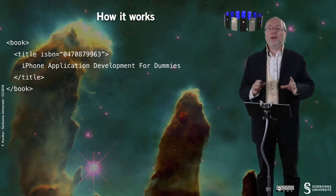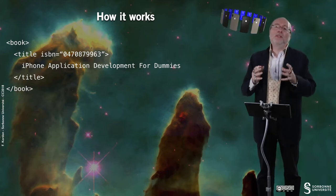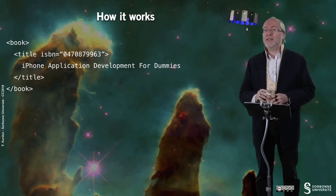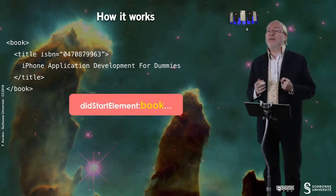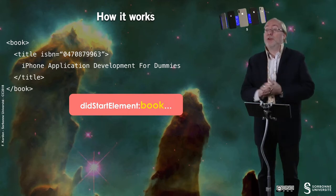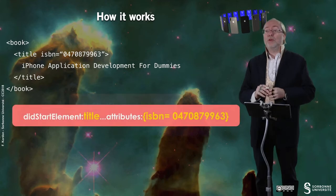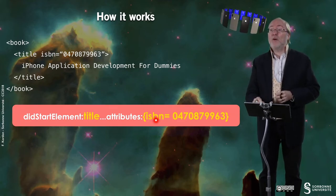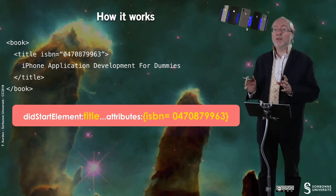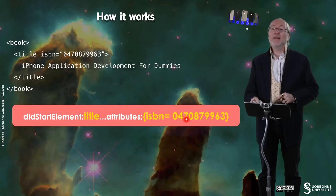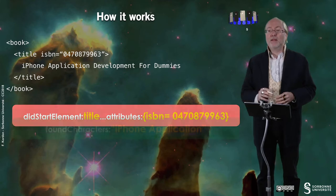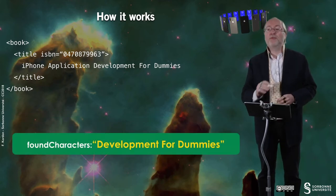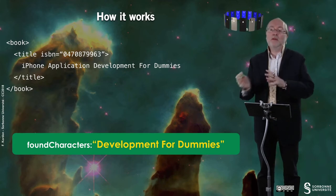Let's have a look at how it works. Here is a bit of XML — very simple XML, the description of a book. When you parse this XML tag, the did-start-element method is invoked and it tells you that it's 'book'. Then you continue, you have another did-start-element for 'title', and you have a dictionary with one element — the key 'ISBN' and the ISBN reference. Then you may have found characters, such as 'iPhone application' and 'development', and you can get these strings all together.